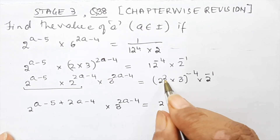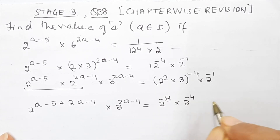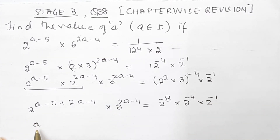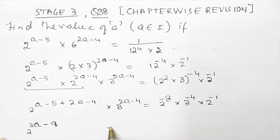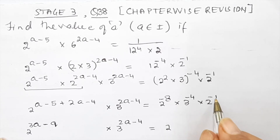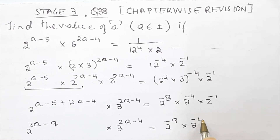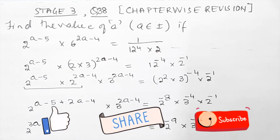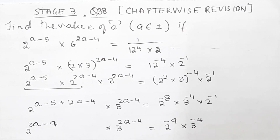The indices get added: 2 to the power (a minus 5 plus 2a minus 4) into 3 to the power (2a minus 4). On the right side, 2 squared will be multiplied by minus 4, giving minus 8, into 3 to the power minus 4 into 2 to the power minus 1. Simplifying the left exponent: a plus 2a is 3a, minus 9. So we have 2 to the power (3a minus 9) into 3 to the power (2a minus 4) equal to 2 to the power (minus 8 plus minus 1, which is minus 9) into 3 to the power minus 4.